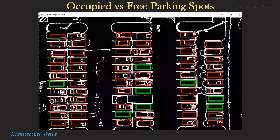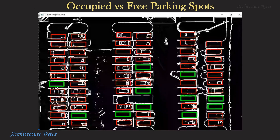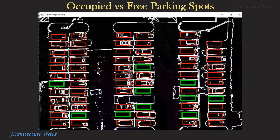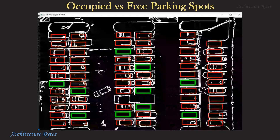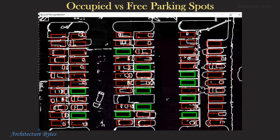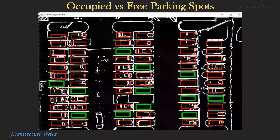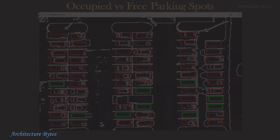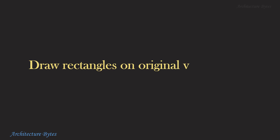Same rectangles, but now color coded signifying an occupied or free spot. We cropped each rectangle and examined it for the count of white pixels. If the count is below a threshold value, that rectangle or parking spot is free; else it is occupied. You can use an appropriate threshold value to ensure accuracy of free spot identification.